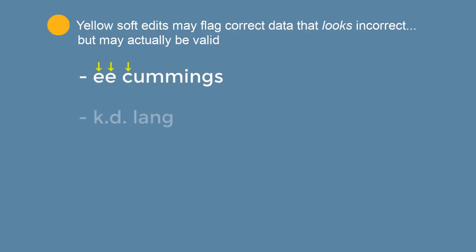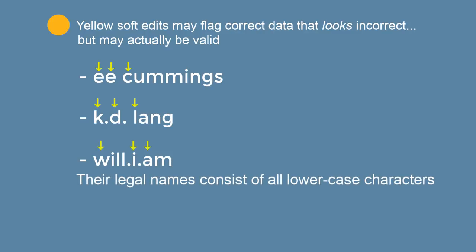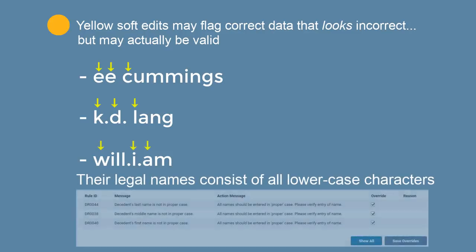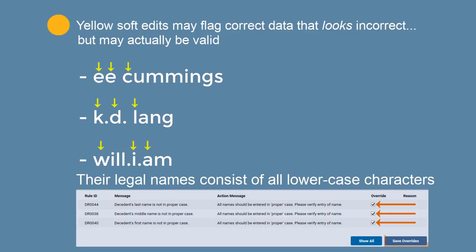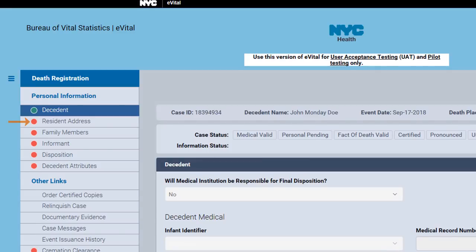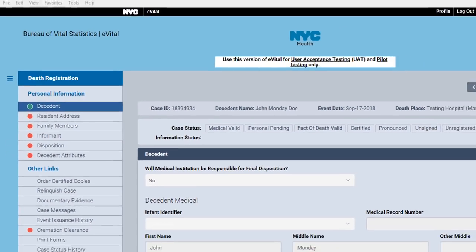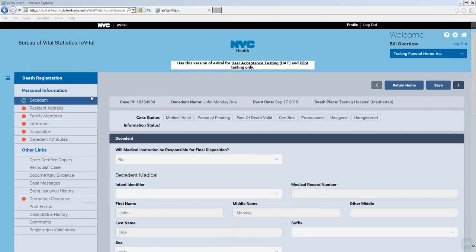For example, E.E. Cummings, k.d. lang, and will.i.am would show up as soft edits requiring overrides. Confirm the flagged data by checking the override boxes at the bottom of the form and then saving those exceptions. Yellow edits can be overridden and will not prevent the death certificate from being signed by the funeral director, nor will it prevent the case from being registered by the burial desk. Red dots indicate one or more hard edits which must be corrected before the death certificate can be signed. Red dots cannot be overridden.